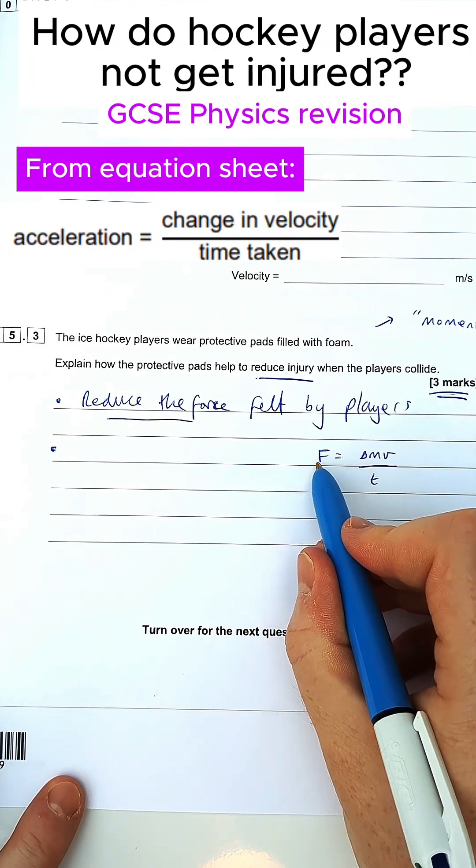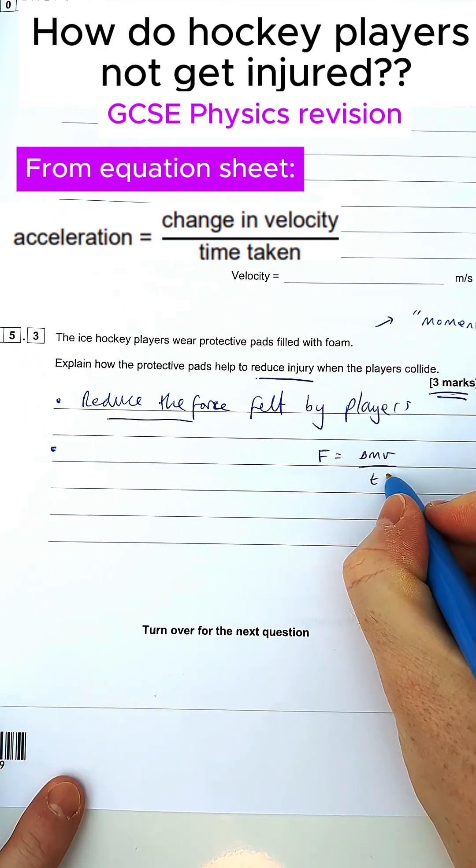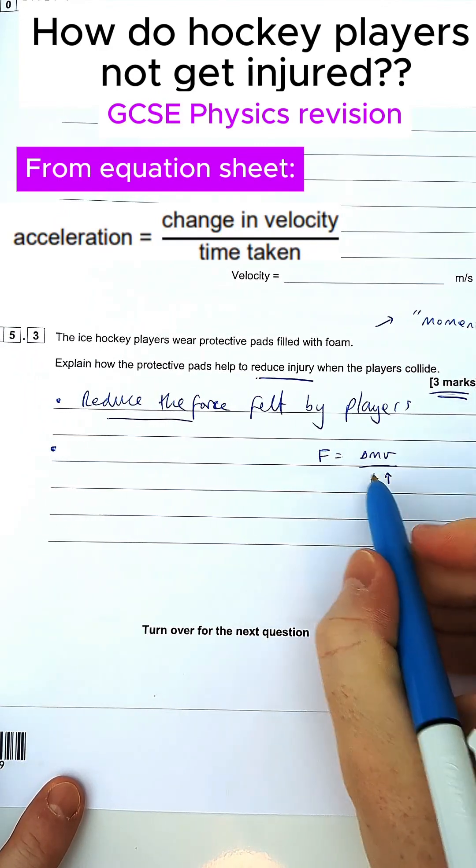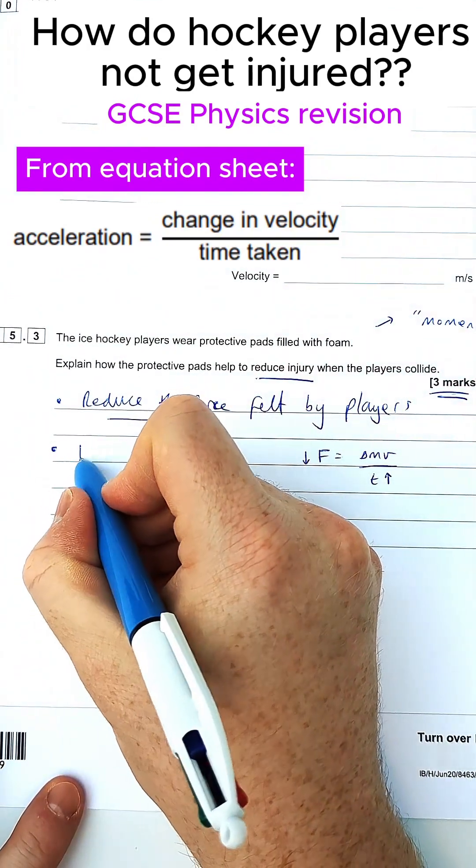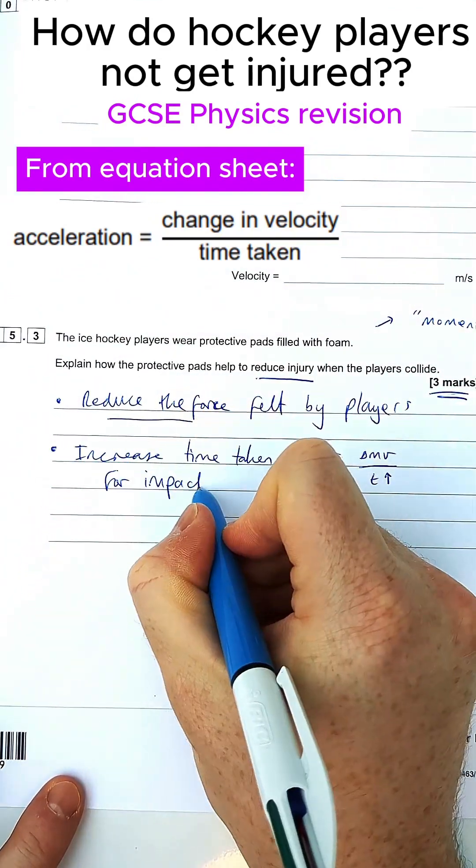Because force is on the top of its fraction and time is on the bottom, if I was to increase the time, that would cause the overall force to go down, which is what we want. So the idea is you've got to increase the time taken for the impact.